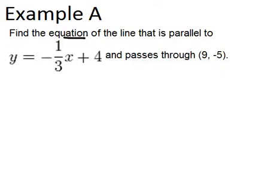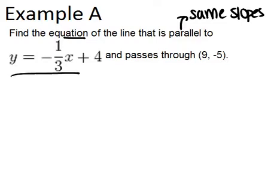Remember that parallel lines always have the same slopes. So if we're looking for a line that's parallel to y equals negative one-third x plus four, that means our line has to have a slope of negative one-third. So our line's got to start out with the equation y equals negative one-third x plus something. We just don't know our y-intercept or our b.